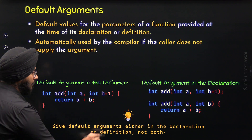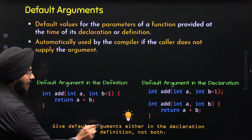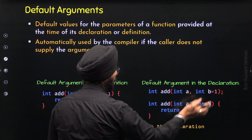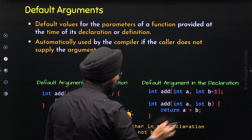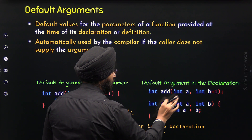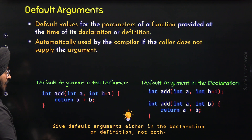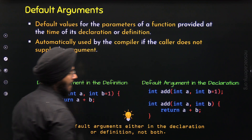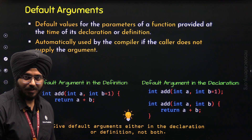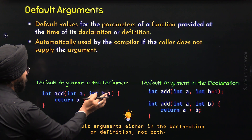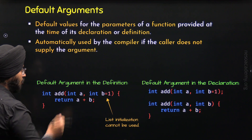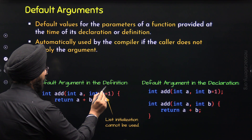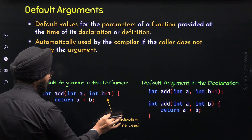This is because of the rule we need to follow: give default arguments either in the declaration or definition, not both. This is the reason that when I have provided the default argument at the time of declaration, I have not provided it at the time of definition. We can either give the default argument at the time of definition or at the time of declaration, but not both. Also, we cannot use list initialization to provide the default argument — we need to use copy initialization, using the assignment operator.